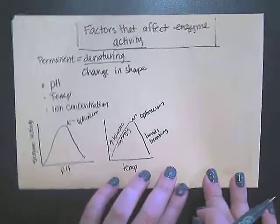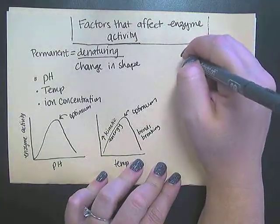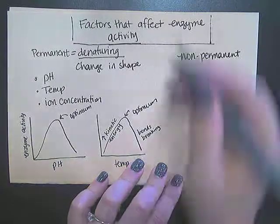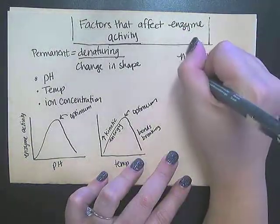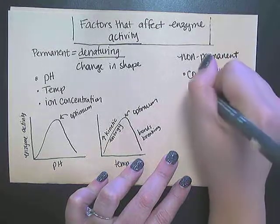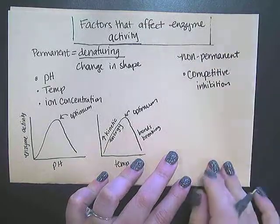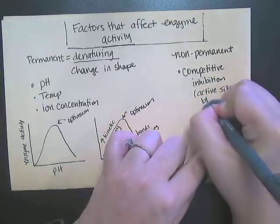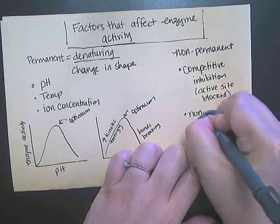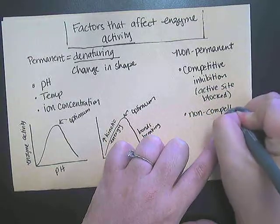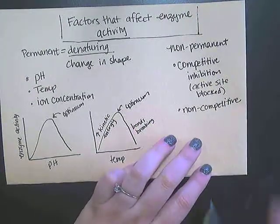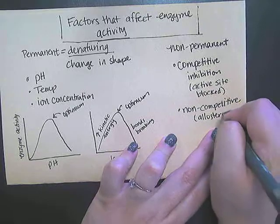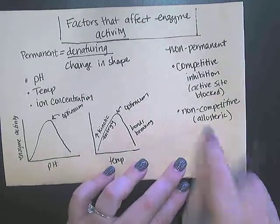The second way we're going to talk about factors that affect enzyme activity are the non-permanent ways. We covered competitive inhibition — remember, with competitive inhibition, your active site is blocked. We also talked about non-competitive inhibition. With that allosteric regulator, your active site is not blocked, but the allosteric regulator changes the shape of the enzyme so the substrate no longer fits.